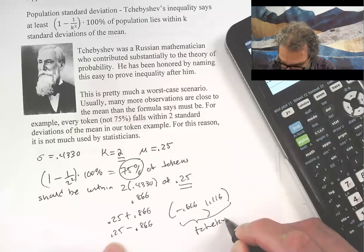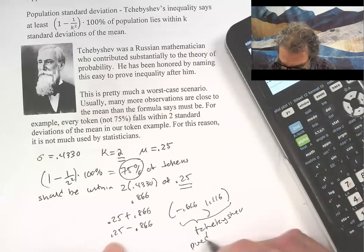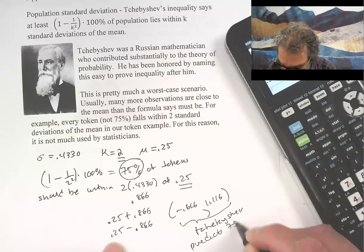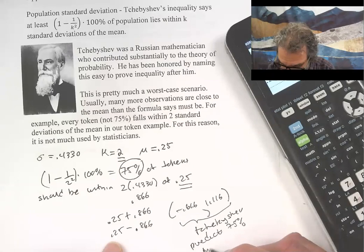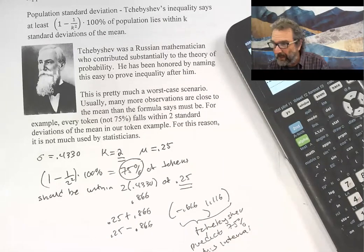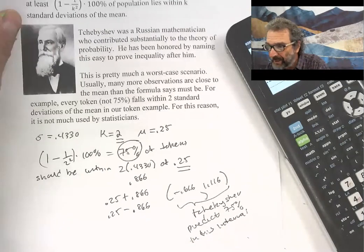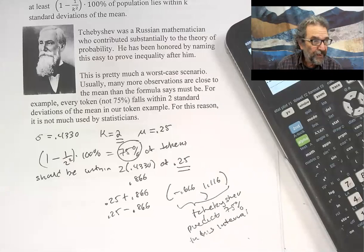So Chebyshev predicts 75 percent in this interval. We see 100 percent are in that interval. That's the kind of thing that happens when you use Chebyshev's inequality.